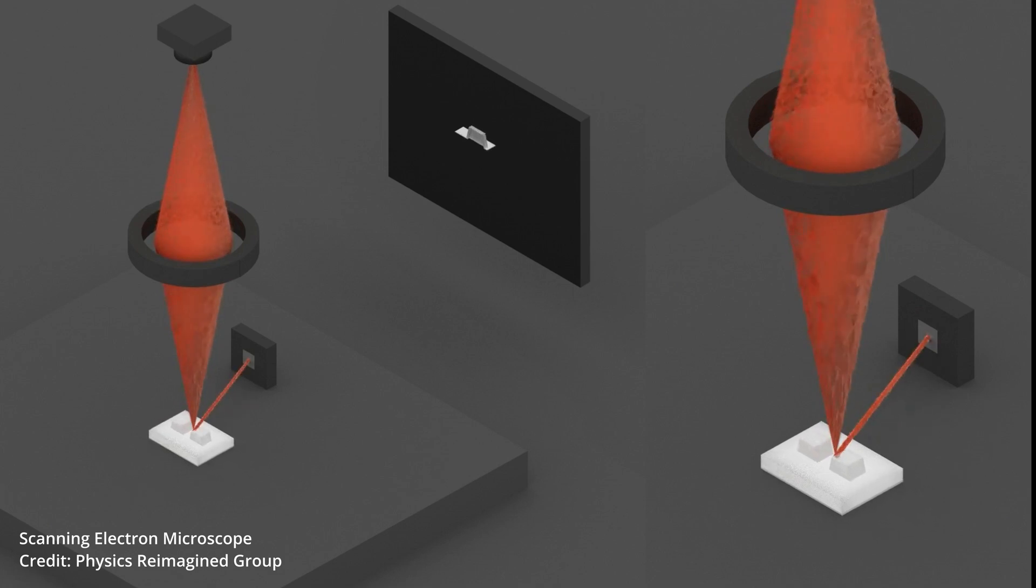The incident electrons get scattered elastically and inelastically by the sample, and the scattered electrons get picked up by a detector. That interaction results in a signal to your detector, and a computer turns that signal into a picture on a computer monitor.